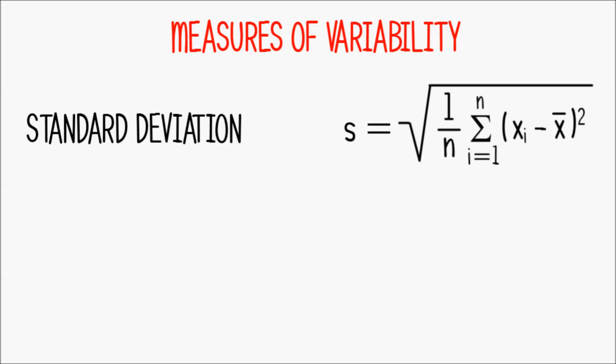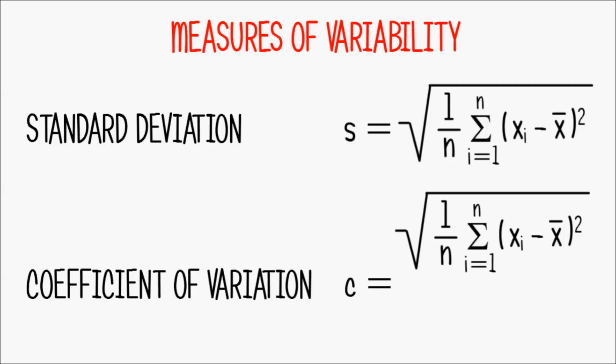This measure of variability is called coefficient of variation or relative standard deviation. The symbol is normally a lower case c and the rule is take the standard deviation and divide by the arithmetic mean.